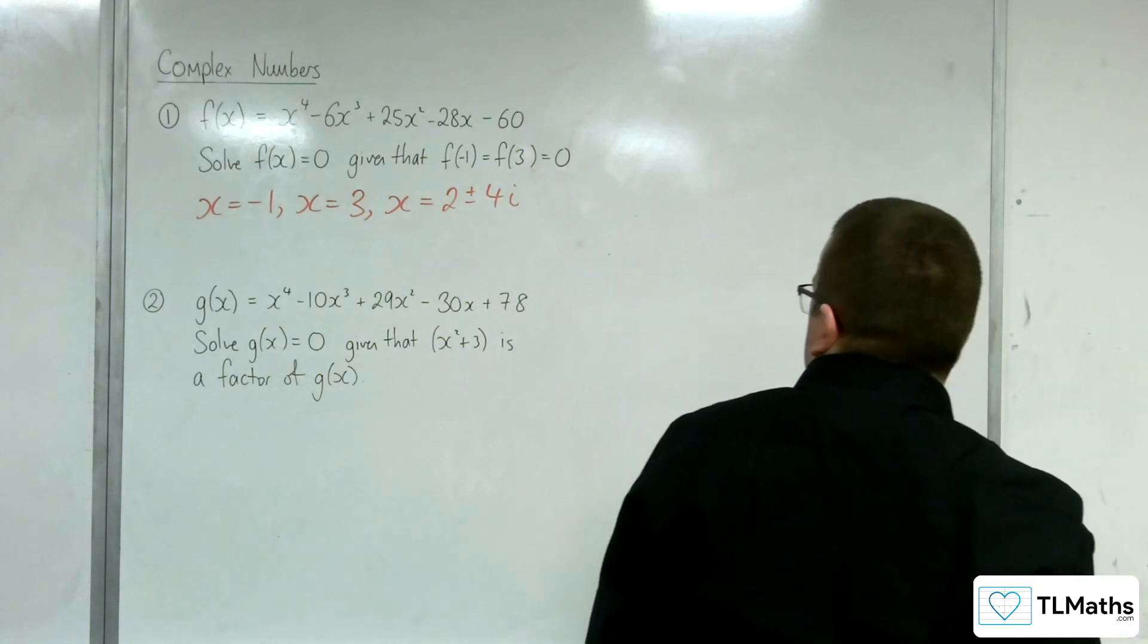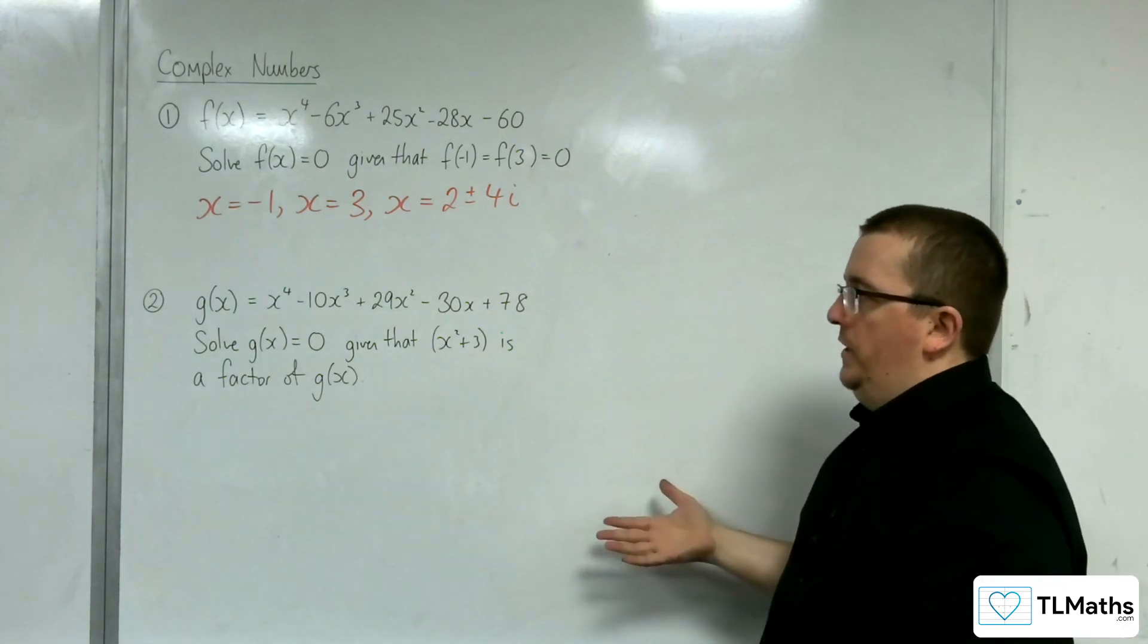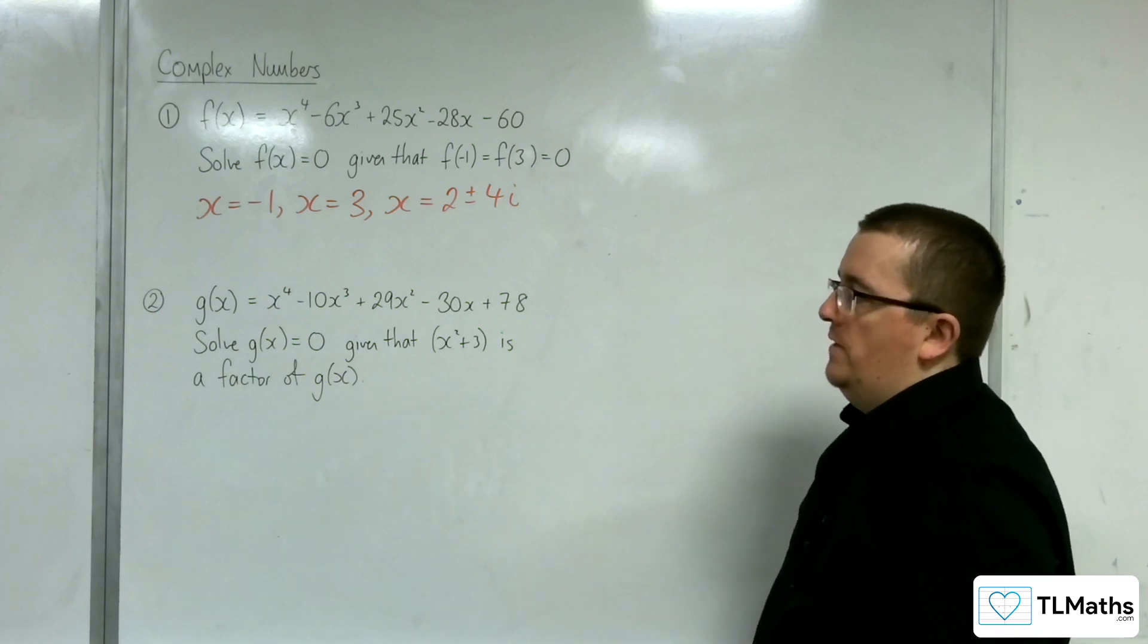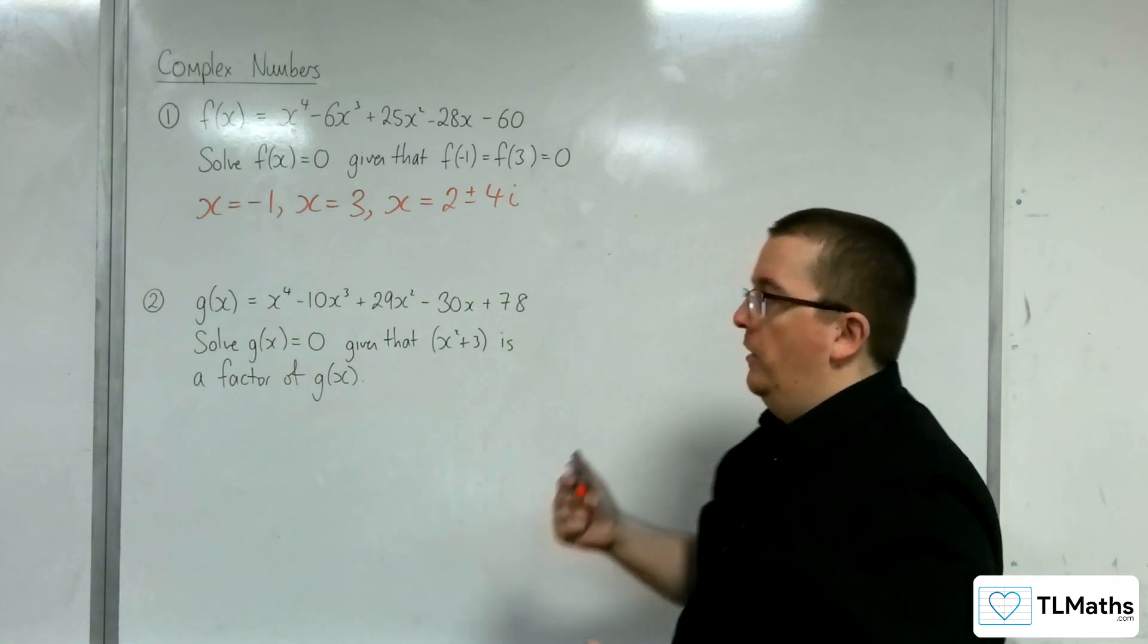So let's have a look at this next one. Question 2, we've got another quartic. We're told that x² + 3 is a factor of g(x). So that means we can go straight in with the polynomial division.